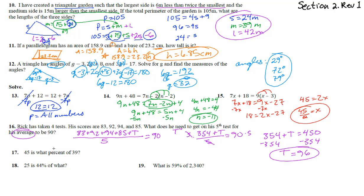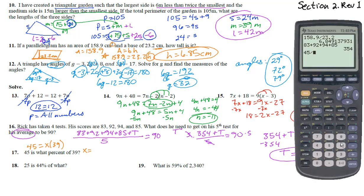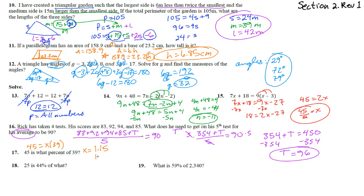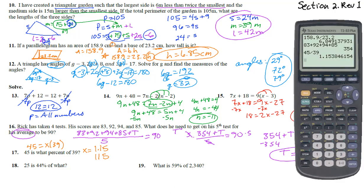Number 17: 45 is what percent of 39? This gives the equation 45 equals x times 39. Dividing both sides by 39, x equals 45 divided by 39, which is approximately 1.154, or 115.4 percent.